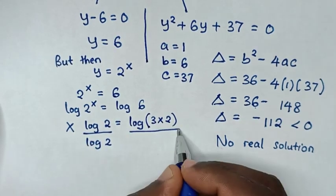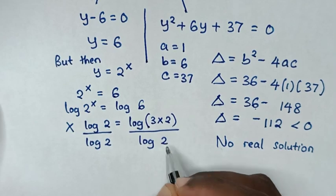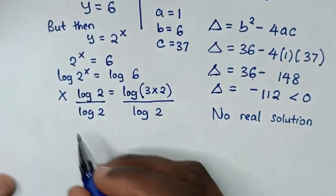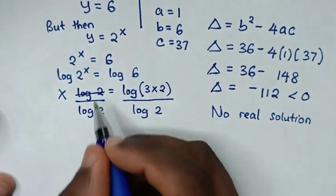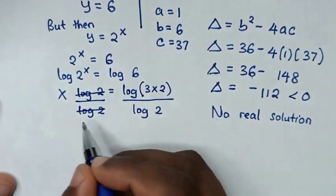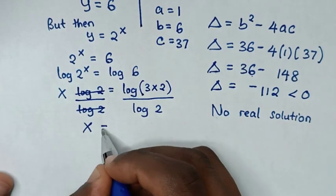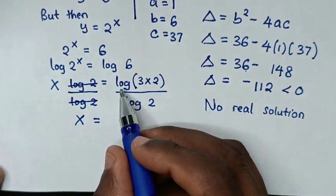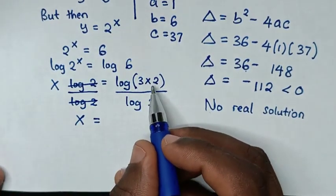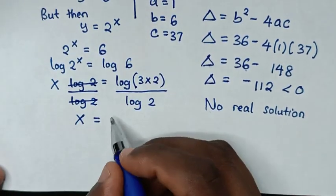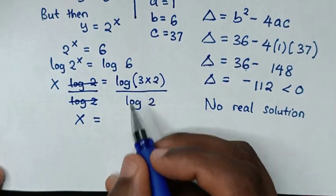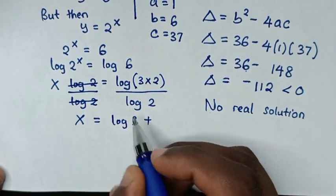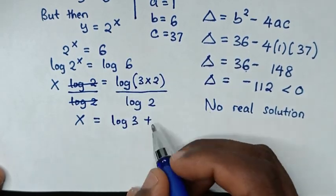We divide both sides by log(2). Log(2) cancels on the left, giving x = log(3 × 2) divided by log(2), which equals log(3)/log(2) plus log(2)/log(2), simplifying to log₂(3) + 1.